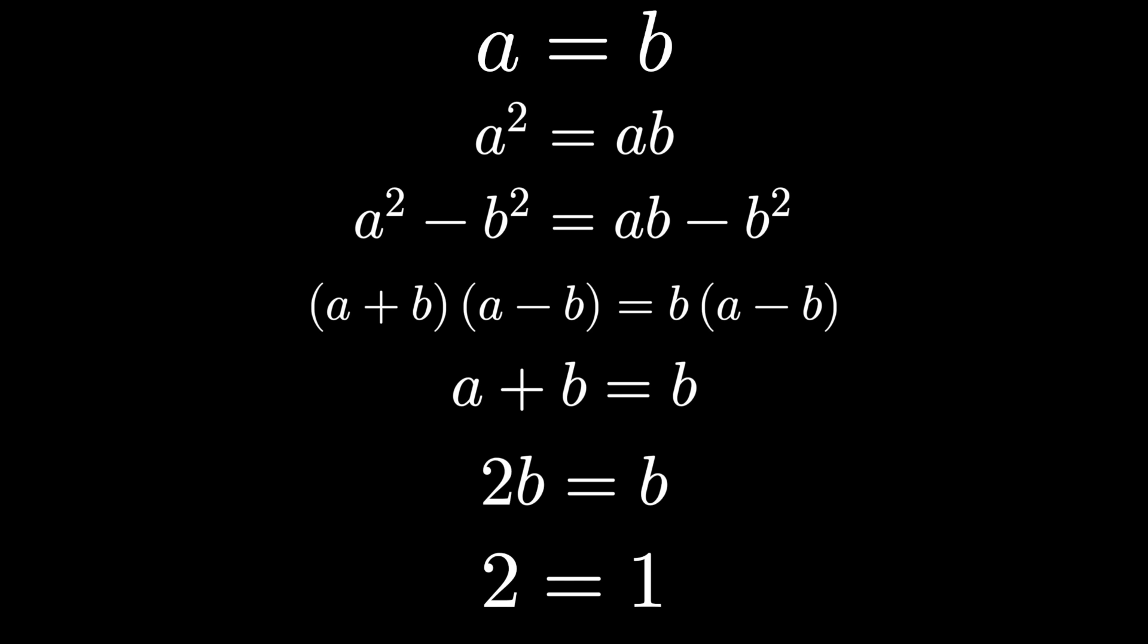There's a hidden division by zero in here. Since we assumed a equals b, then the quantity a minus b has to be zero. And we're not allowed to cancel zero on both sides, we can't divide by zero.